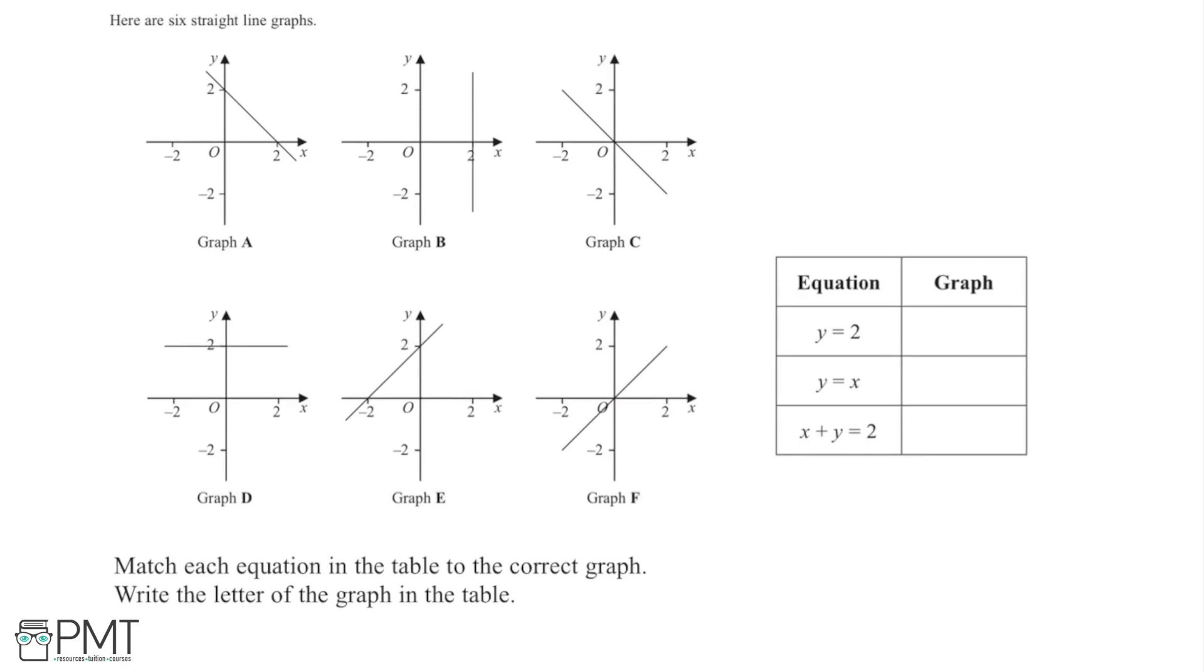In this question, we're given six straight line graphs and we're asked to match each equation in the table to the correct graph. We're asked to write the letter of the graph in the table. In this column, we have the equations and we need to write the letters of the graph in the corresponding box.